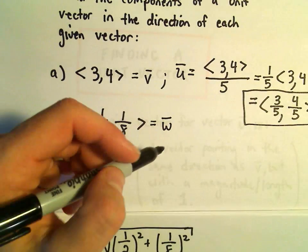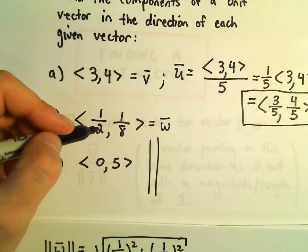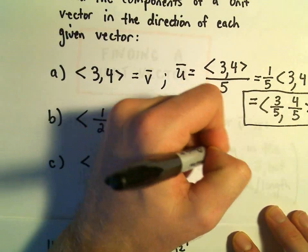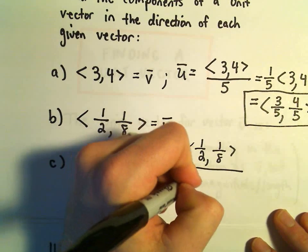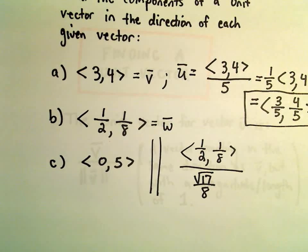So, again, what we have to do in this case, I'm going to squeeze it down here in the bottom right. Okay, so we're dividing, we're taking our vector with components 1 half and 1 eighth. And we're dividing that by the magnitude, the square root of 17 over 8.